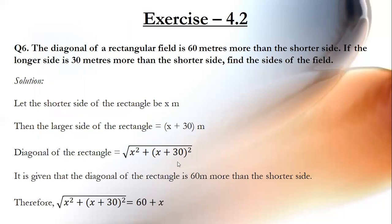Moving on to Question Number 6. The diagonal of a rectangular field is 60 meters more than the shorter side. If the longer side is 30 meters more than the shorter side, find the sides of the field. Let the shorter side of the rectangle be x meters. Then the larger side will be x plus 30 meters. The diagonal of the rectangle is the square root of the sum of the squares of both sides.